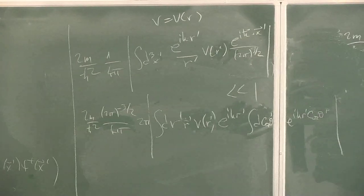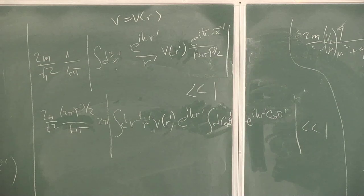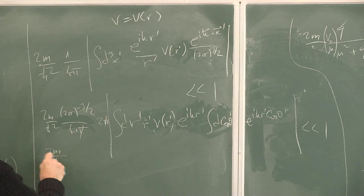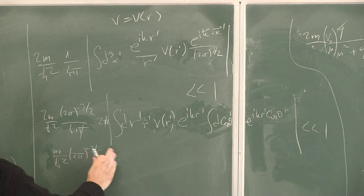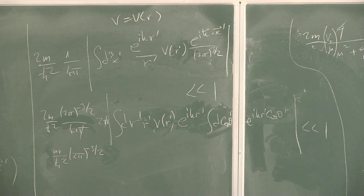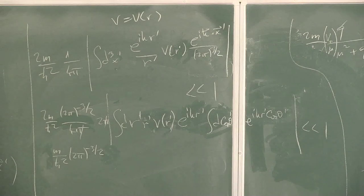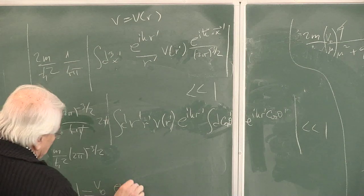I have put everything in proper order. This should be very much less than 1. There is 4pi squared, et cetera, (2m over h-bar squared), (2pi to the minus 3). In order to finish this expression I need the explicit form of v. Let's do it for the Yukawa. We found the amplitude for the Yukawa, so I have to carry out all these integrations for the Yukawa. Let's take v as (v0 over mu) e to the minus mu-r divided by r.